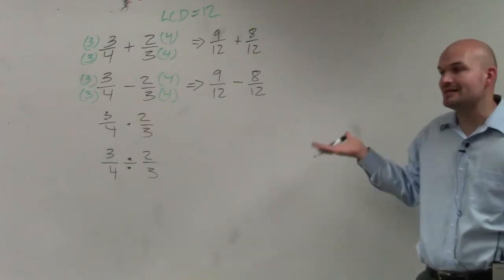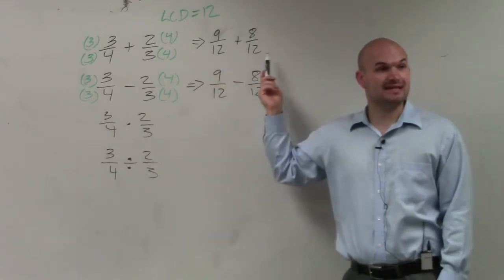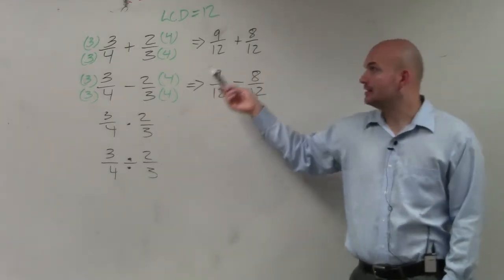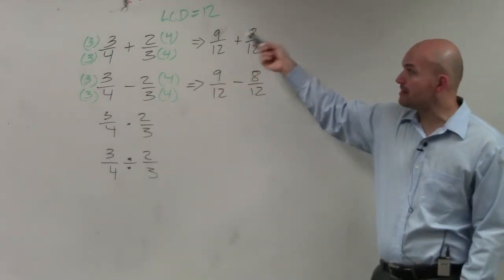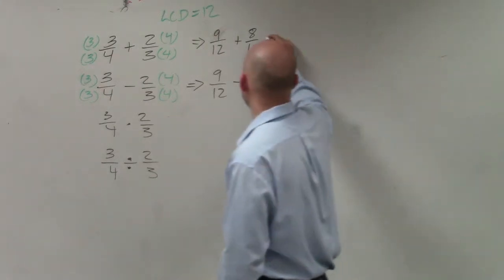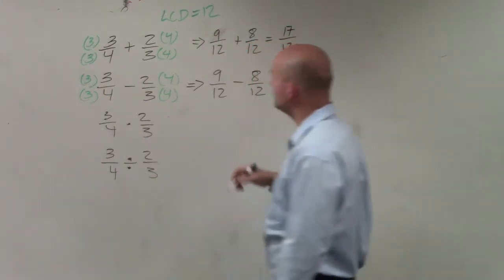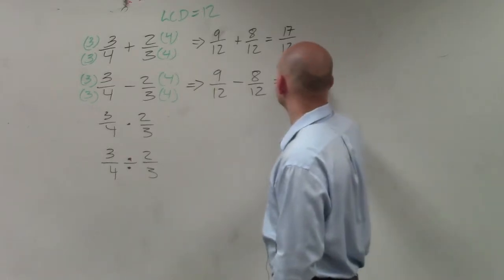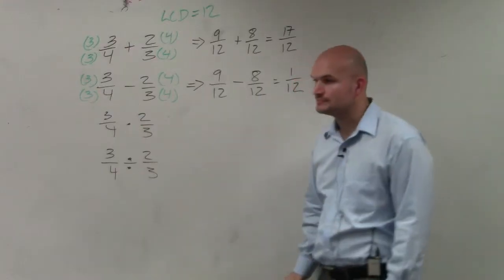So now, you just apply the operation. Since you have a common denominator, you leave that, and you just apply your operation to the numerators. So by adding, I get a final answer of 17 over 12. By subtracting, I get a final answer of 1 over 12.